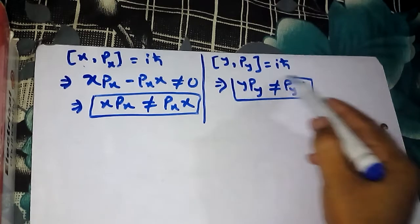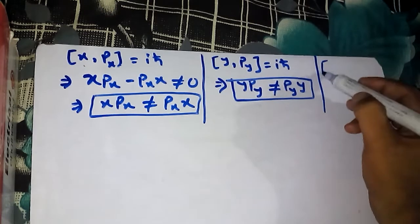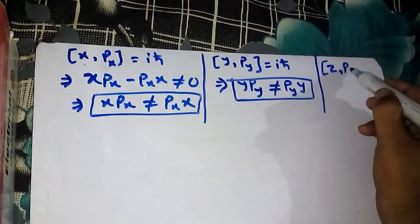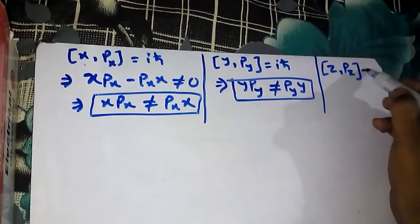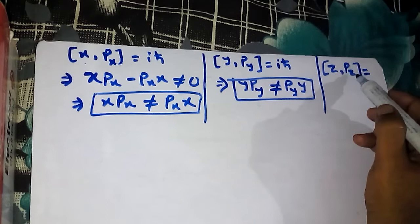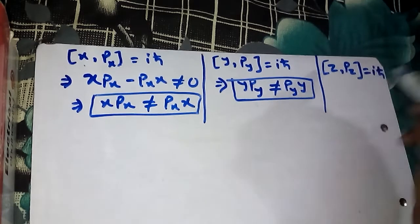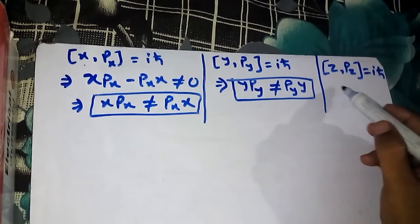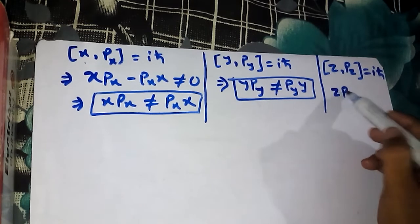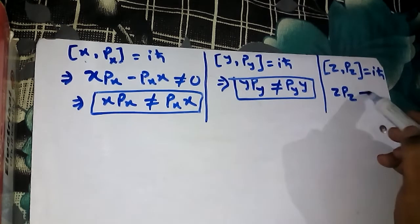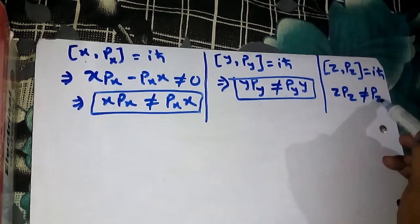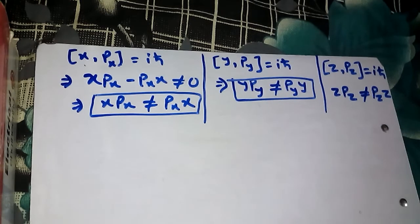Similarly, for the Z component of position and Z component of momentum, [Z, Pz] is again iħ. Since it is a nonzero value, you can infer that ZPz can never be written as PzZ. The order matters — if Z comes first then Pz, you must keep that order. ZPz is different from PzZ.